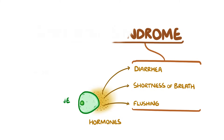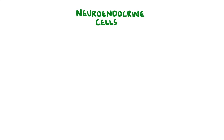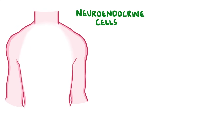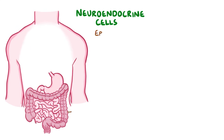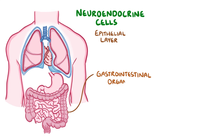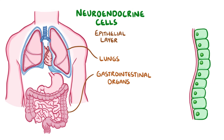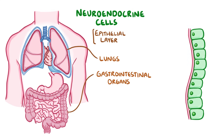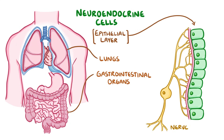So what is a neuroendocrine cell? Well, they're found in tissues throughout the body, and particularly in the epithelial layer of the gastrointestinal organs and the lungs. What happens is, they receive signals from nerve cells, and in response they release hormones into the blood.